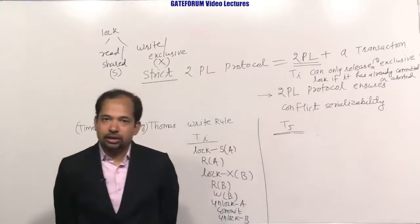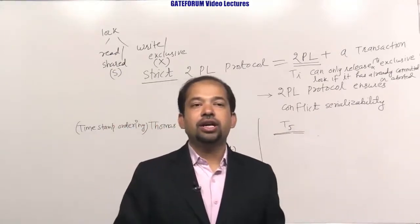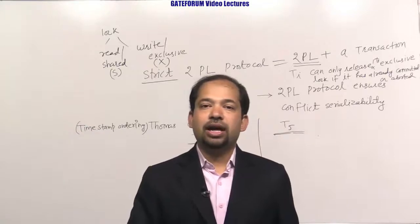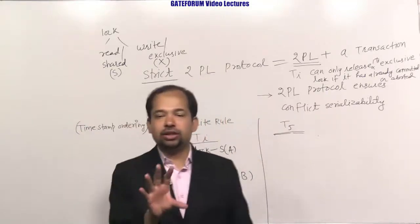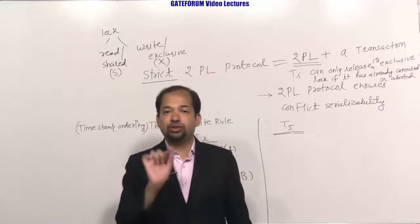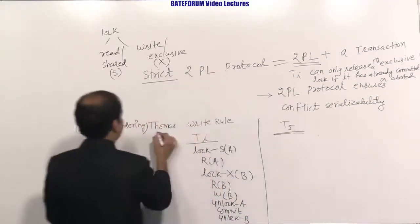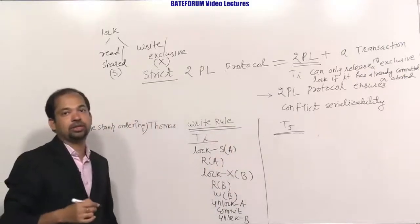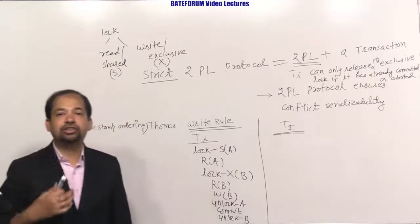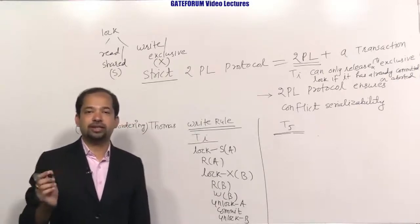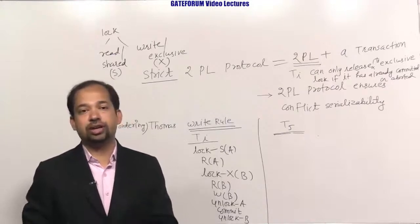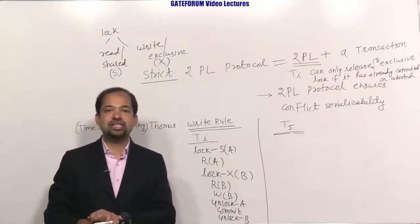For option two, Thomas Write Rule says: in order to perform a write operation, if a transaction has not satisfied the condition of the timestamp ordering protocol for writing a data item, Thomas says do not continue with that operation — just ignore it. If you do this, there will be no guarantee of conflict serializability. So both options are true, and the answer is D.